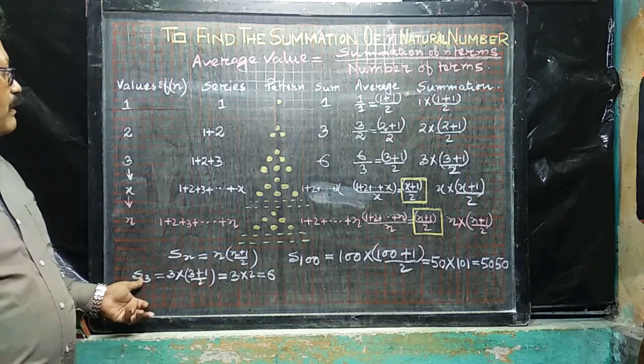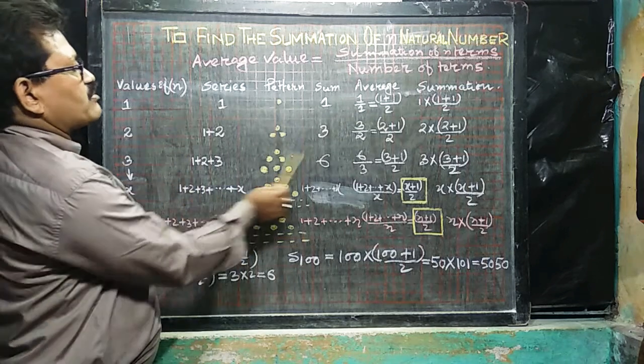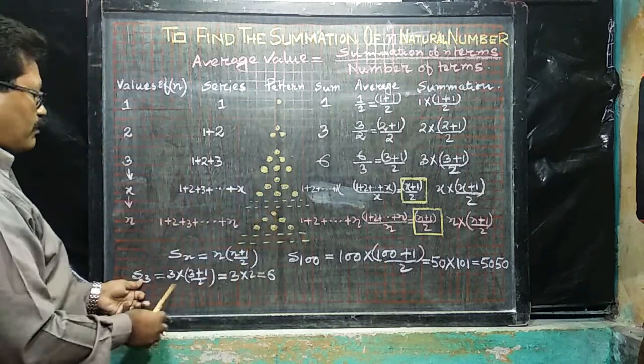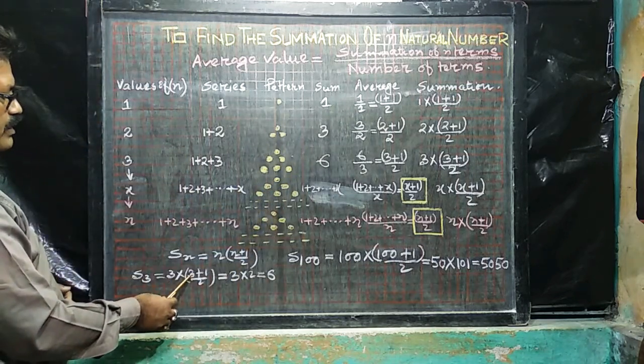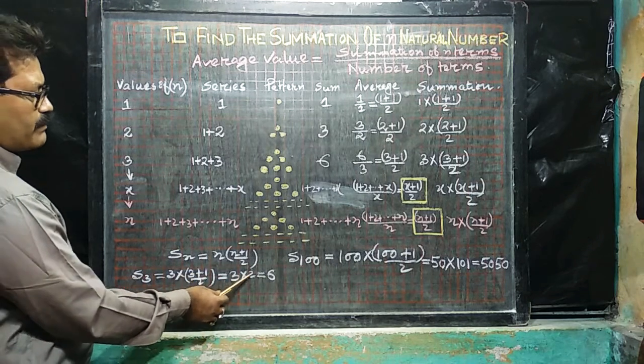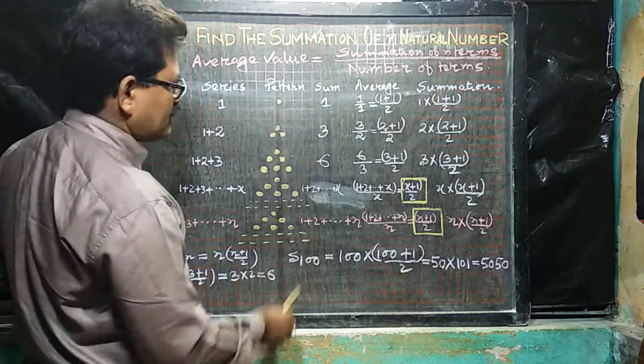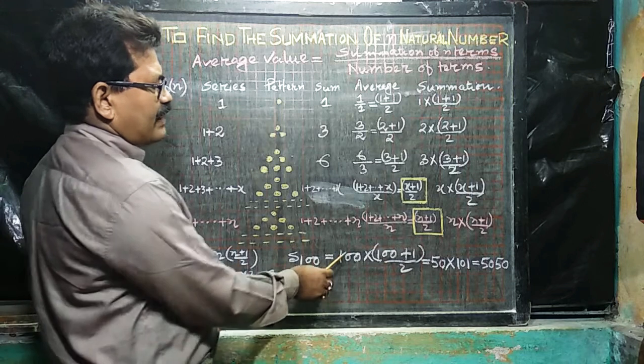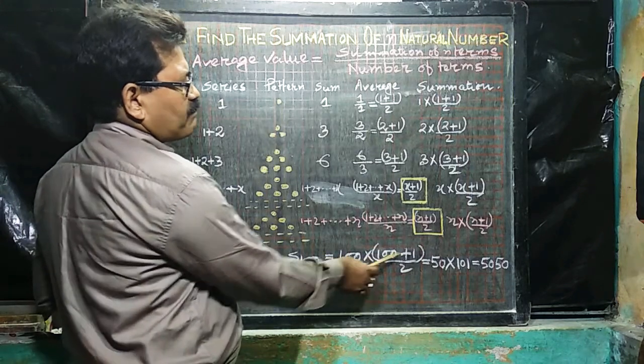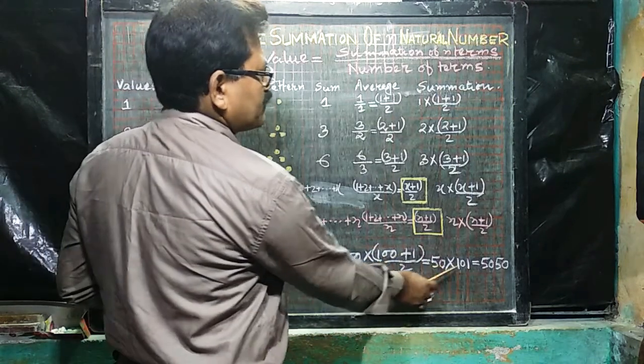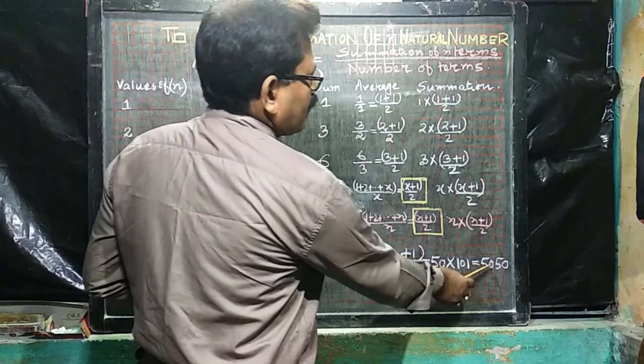For example, S_3, as S_3 has 6, now we are considering that formula, 3 multiplied by 3 plus 1, divided by 2, 3 multiplied by 2, that is equal to 6. And S_100, 100 multiplied by 100 plus 1, divided by 2, that is 50 multiplied by 101, 5050.